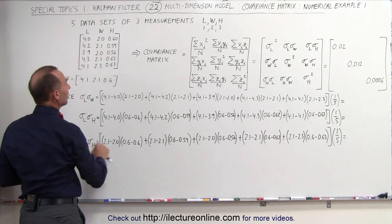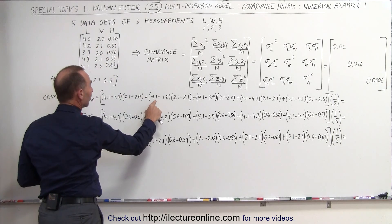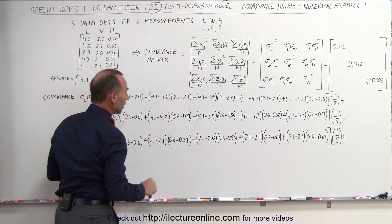Then we go to the second reading, we subtract the reading, the second reading, 4.2 from the average on the length, and we subtract the reading 2.1 from the average of the width.